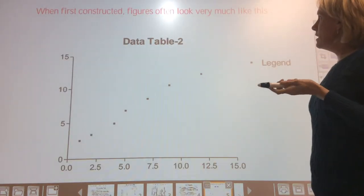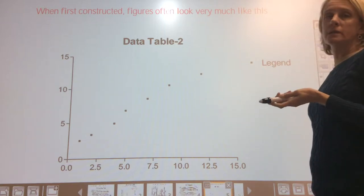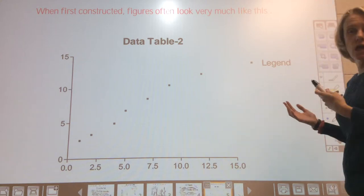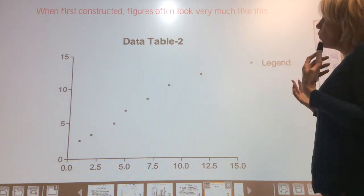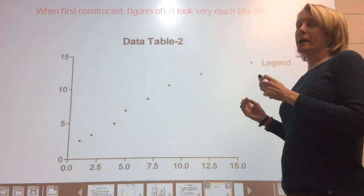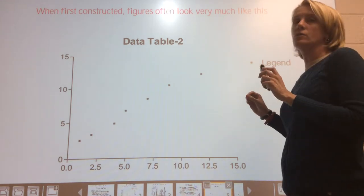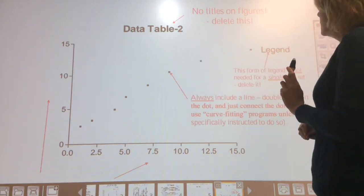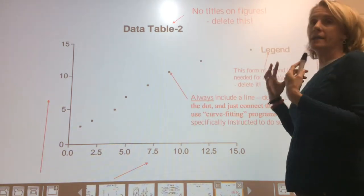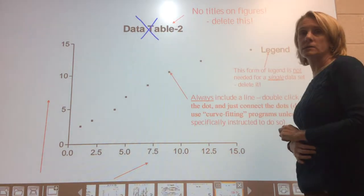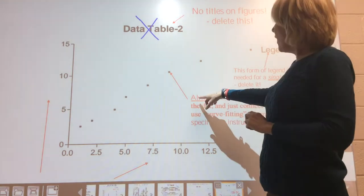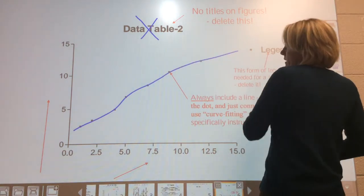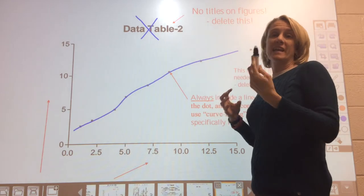When you first use Excel or another graphing program, your figure often looks like this. There are several problems: no titles on figures — in science, delete any title your graphing program adds. You also want to include a line to visually show the overall trend. In Bio 105 we'll connect the points; later in cells you'll do a line of best fit.